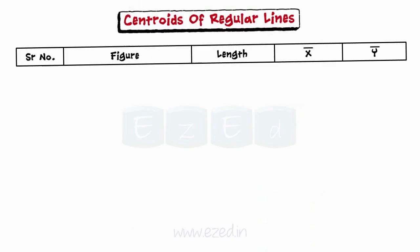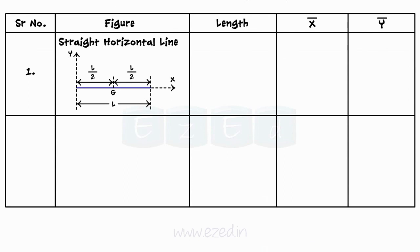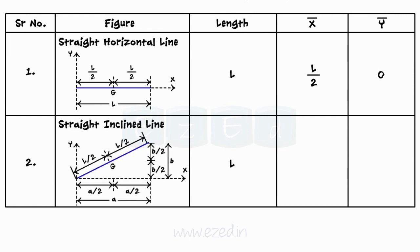The table given shows the centroids of regular lines. Consider a straight horizontal line of length L; its centroid would have its x-coordinate as L/2 and y-coordinate as 0. Next, consider an inclined line of length L. Using Pythagoras' theorem, we can find the projections of the line on the x-axis, that is A, and on the y-axis, that is B. Thus, the centroid would have its x-coordinate as A/2 and y-coordinate as B/2.